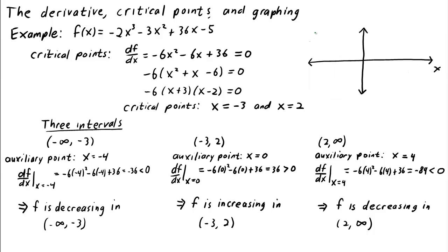Using just this information about the derivative, we can already sketch the basic form of the function. It should decrease until x equals negative 3, turn around and increase until x equals 2, then decrease from then on. Of course, we don't know exactly what it looks like from just the sign of the derivative, and without evaluating the function itself for at least one point, we cannot pin down its vertical location. But just from the intervals where the function increases and decreases, we can get a rough idea of the function's behavior.